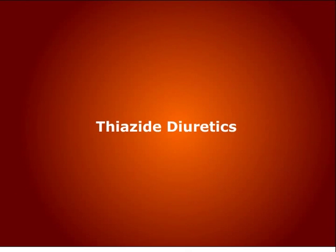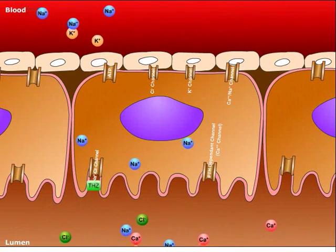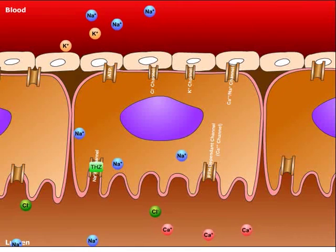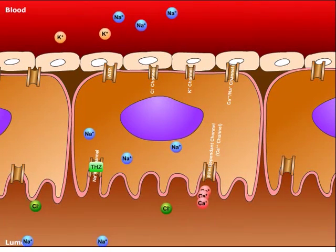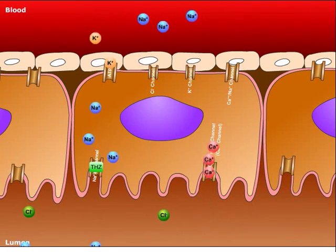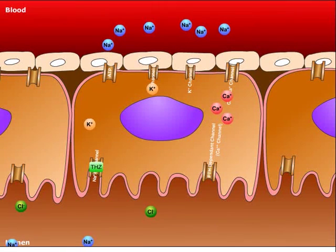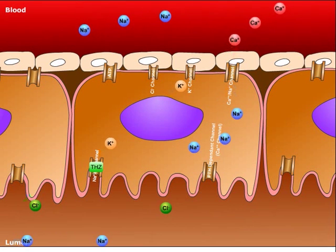The mechanism of action of thiazide diuretics will now be reviewed. Thiazides, labeled here as THZ, block the sodium chloride symport, thus inhibiting their reabsorption, which will lead to a low intracellular sodium concentration. Meanwhile, calcium enters the cell through a parathyroid hormone-dependent channel. Also, sodium is pumped across the basal membrane via the sodium-potassium ATPase, leading to a low sodium intracellular concentration. This causes sodium to be exchanged for intracellular calcium by the sodium-calcium antiporter. Thus, calcium is absorbed into the blood. This is how thiazides produce hypercalcemia.